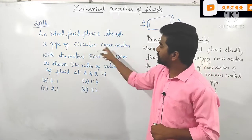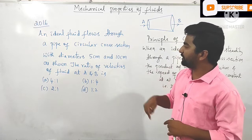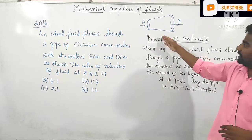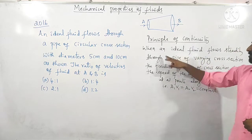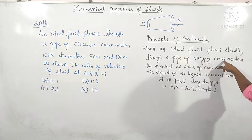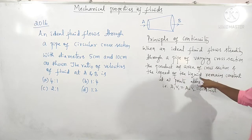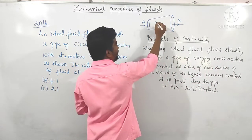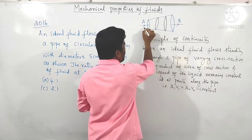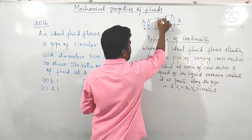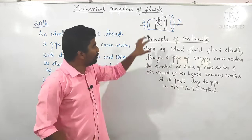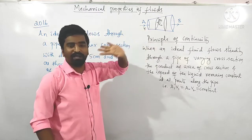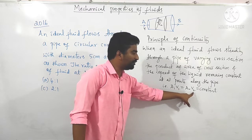The question from 2016: an ideal fluid flows through a pipe of circular cross-section with diameters 5 cm and 10 cm. The ratio of velocities of the fluid at points A and B is asked. This is according to the principle of continuity: when an ideal fluid flows steadily through a pipe of varying cross-section, the product of area of cross-section and speed at each point is constant. That is, A1 into V1 equals A2 into V2 equals constant.